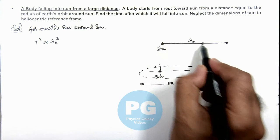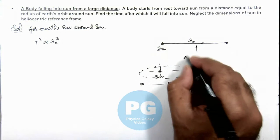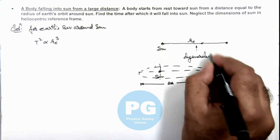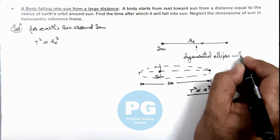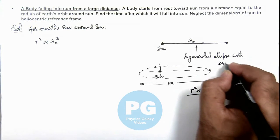So this path we can call as a degenerated ellipse with 2ay equal to re.